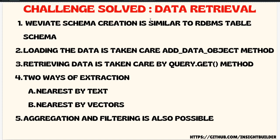Loading data is handled by the add data object method, and retrieving data is handled by query.get object. This query.get object can be chained with multiple other methods like nearest by text and nearest by vectors. You can also apply multiple filtering and aggregation methods. This video will discuss those methods and how to use them in detail.